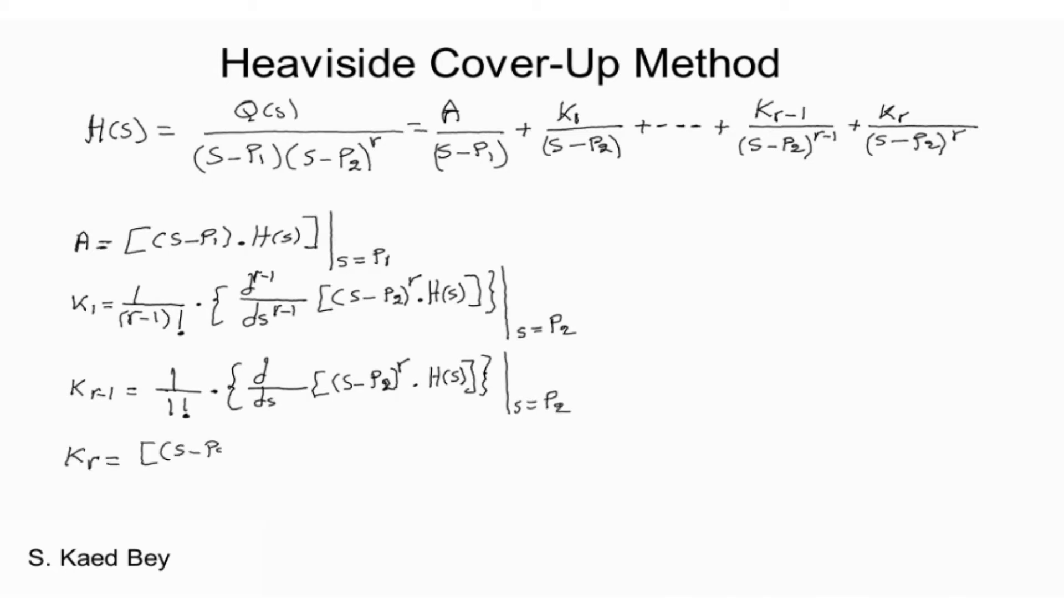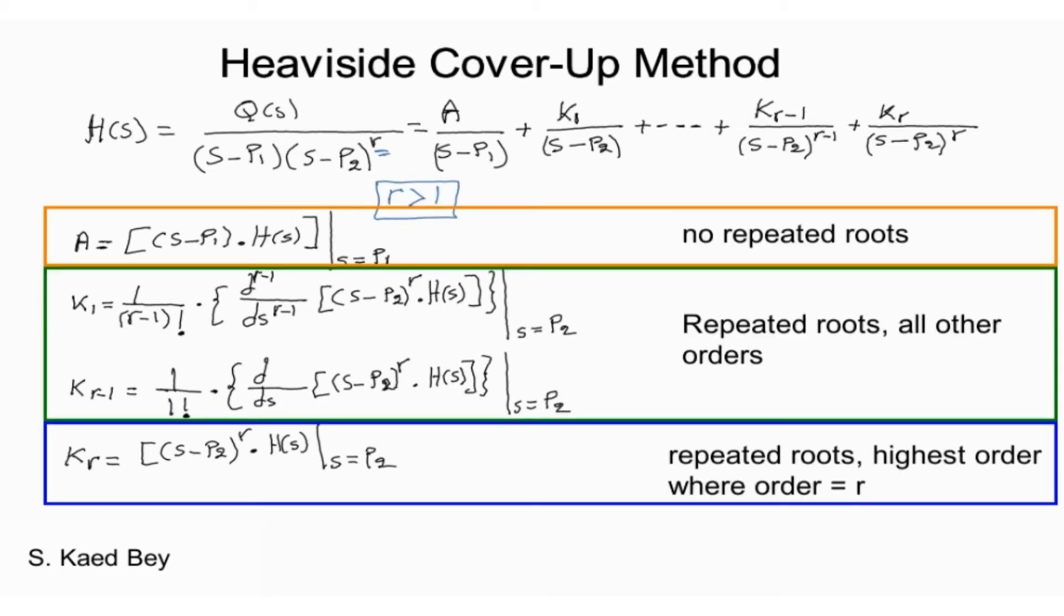The very last coefficient is kr. This represents the highest order repeated root P2. Both are relatively easy to find as shown here.